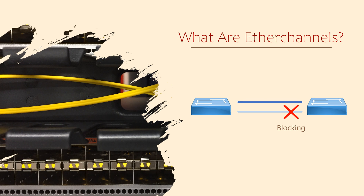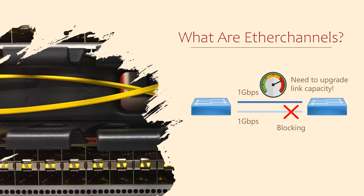Let's say these are both 1GB links. What happens if we have high levels of traffic? If there's more than 1GB of traffic, this one link wouldn't be able to handle it and some traffic would be dropped. Does the second link help out? Nope — it's blocked, it can't do anything. So we could upgrade the link, but that may be expensive. So let's look at an alternative.